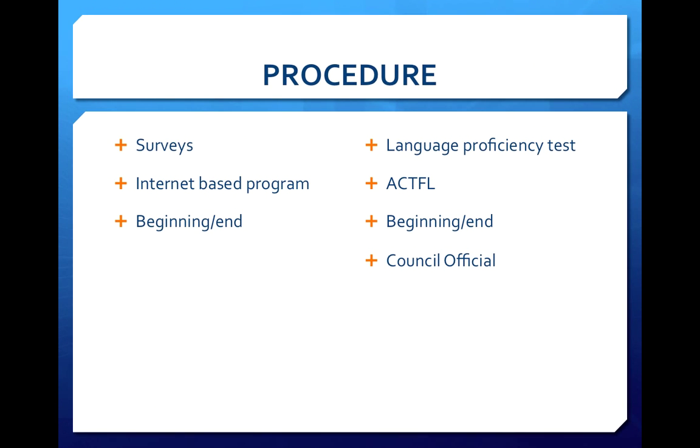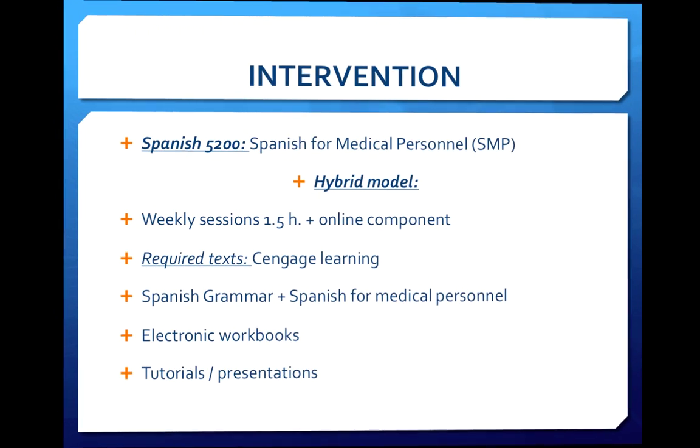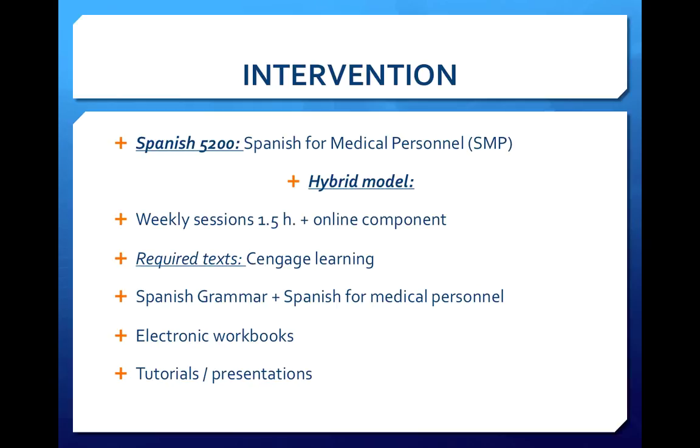The procedure: this research includes surveys, they are internet-based and they will be given to students at the beginning and end of the semester, as well as the language proficiency test by ACTFL. It will also be administered by an ACTFL official to both groups, the hybrid course and the traditional face-to-face course. The intervention is a class of Spanish 5200 for medical personnel. For the hybrid model, students will attend weekly sessions of one and a half hours and an online component. The required texts are by Cengage Learning and include a Spanish grammar book and Spanish for medical personnel, which is specifically for nursing students. There is also an electronic workbook for each one of those, tutorials and presentations.